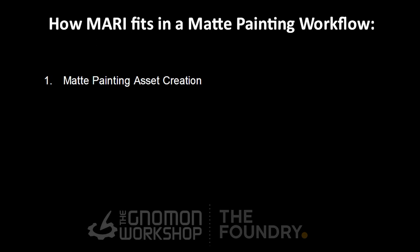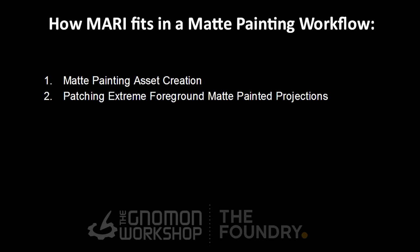The second way that matte painters use Mari is for patching extreme foreground matte painting projections. For example, if you have a rock zooming past camera with a lot of parallax, and a matte painter projects a matte painting onto the rock, you'll inevitably get some stretching and smearing. A good use of Mari is to take that model into Mari and patch up the different areas that are smearing.